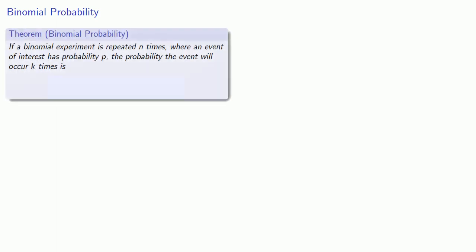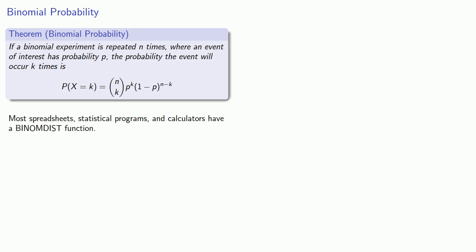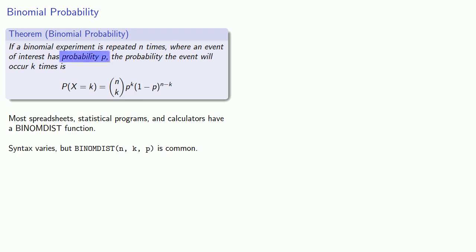So how do we calculate binomial probabilities? If a binomial experiment is repeated n times, where an event of interest has probability p, the probability the event will occur k times is given by a formula. Calculating the different components of the formula is somewhat tedious, and as a result most spreadsheets, statistical programs, and calculators have a binomial distribution function. The syntax varies, but BINOMDIST(n, k, p) is common. Once we identify that an experiment is binomial, we need to know: how many times the experiment was repeated, how many times the event of interest occurred, and the probability of the event of interest.